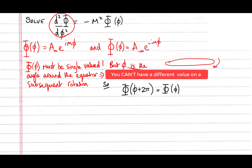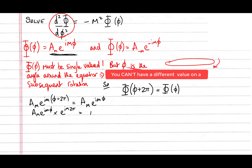So we require phi(φ + 2π) = phi(φ). For the plus solution, we write: A_m · e^(im(φ+2π)) = A_m · e^(imφ). Expanding the left side: A_m · e^(imφ) · e^(im·2π) = A_m · e^(imφ). This means the factor e^(im·2π) must be equal to one for this equation to be valid.